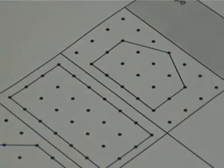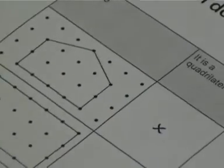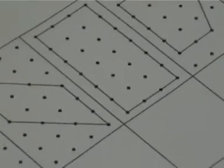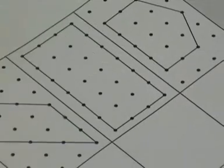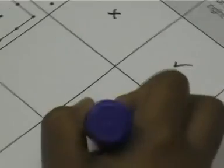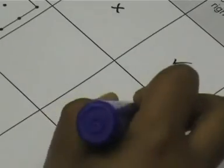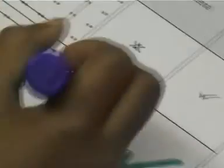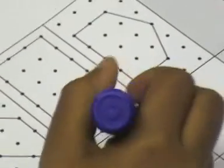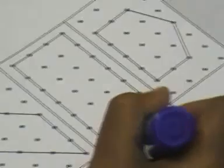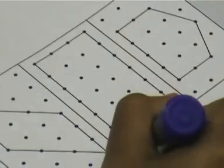This one is a rectangle. A rectangle has four right angles, so it has one or more right angles, and it is a quadrilateral because it has four sides and they have to be straight.